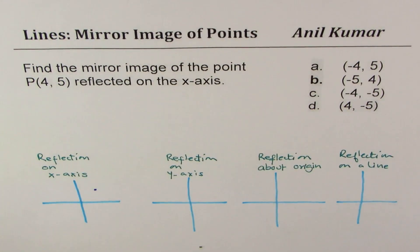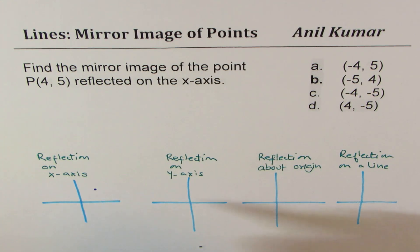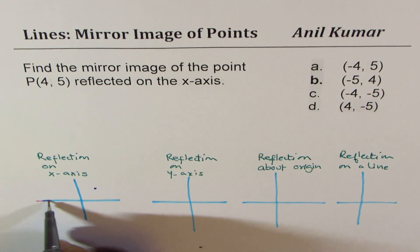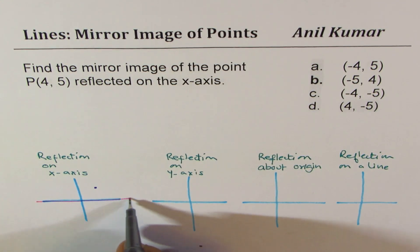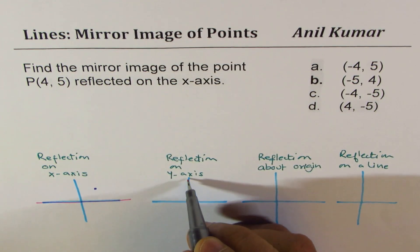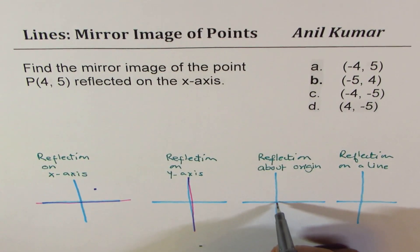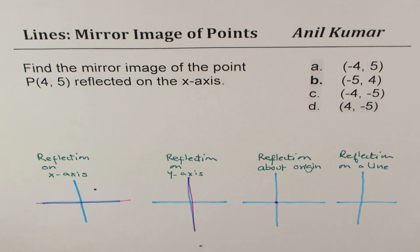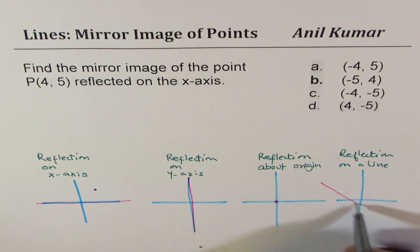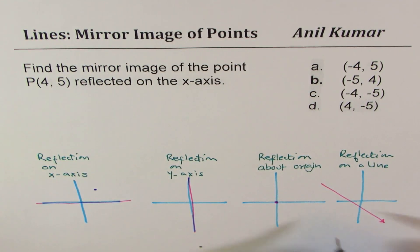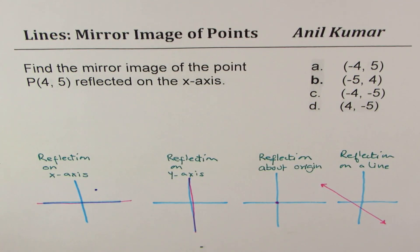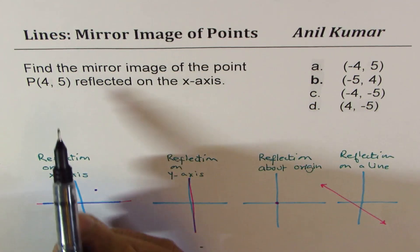So the scenario is like this. In the first case, we'll consider as if the mirror is placed along the x-axis. In the second case, when the mirror is placed along the y-axis. Then we'll consider reflection about a point, and then we'll take up a line. You could have a point somewhere in the coordinate plane.